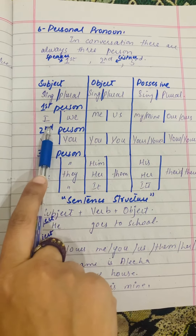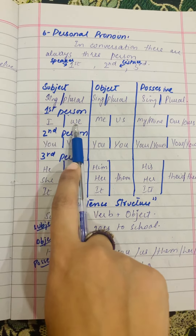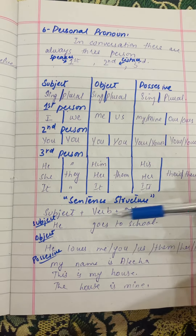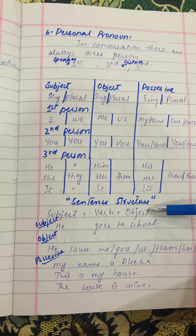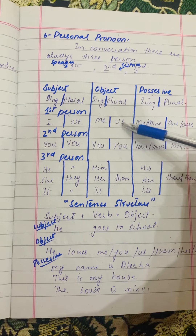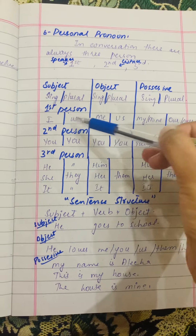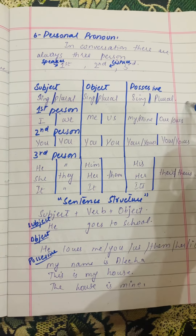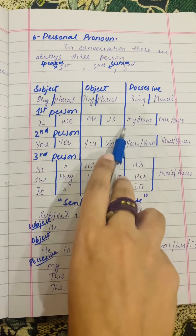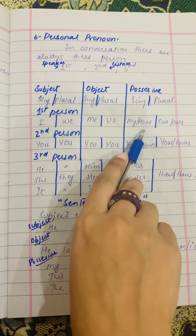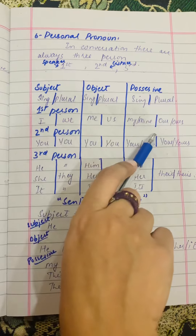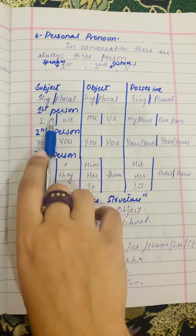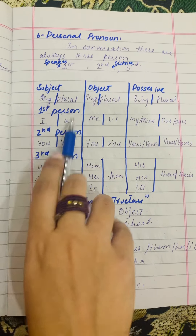For the first person singular, the subject is 'I,' and the plural is 'we.' In a sentence structure there are three parts: subject, verb, and object. When 'I' becomes the object it changes to 'me,' and 'we' changes to 'us.' For possessive, 'I' changes to 'my' or 'mine.' For example: 'I have these pencils' becomes 'These pencils are mine.' Similarly, 'we' changes to 'our' or 'ours.'